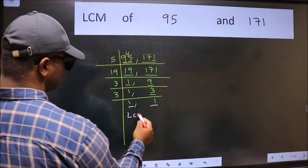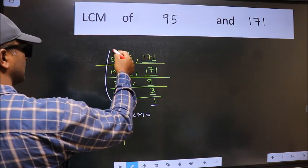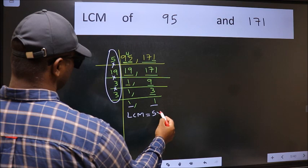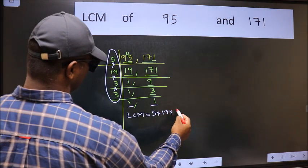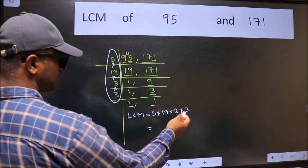So our LCM is the product of these numbers. That is 5 into 19 into 3 into 3. When we multiply these numbers, we get 855 as our LCM.